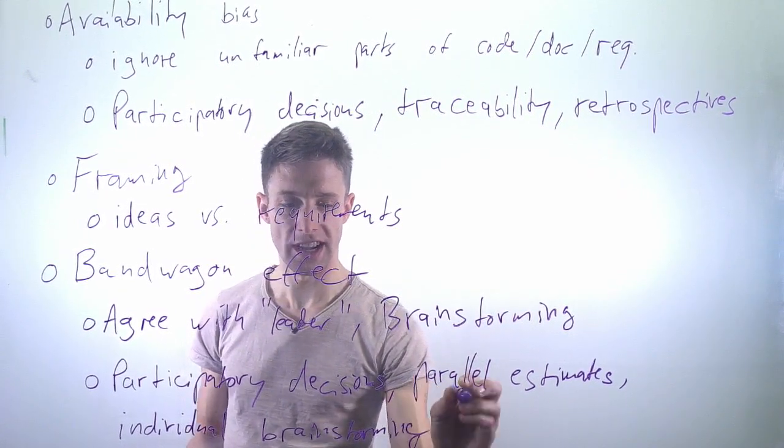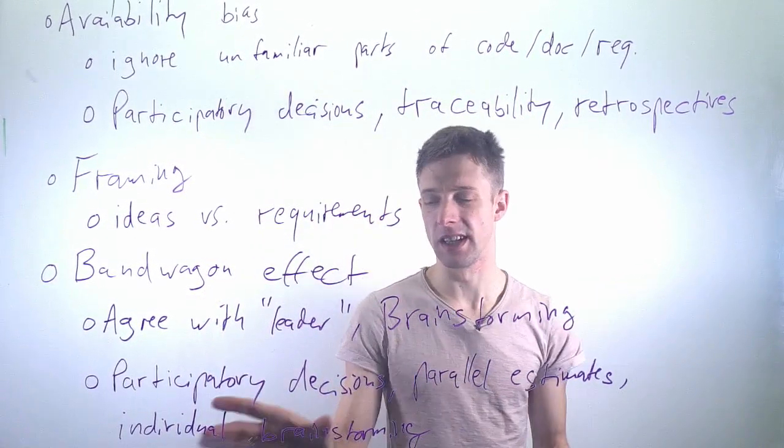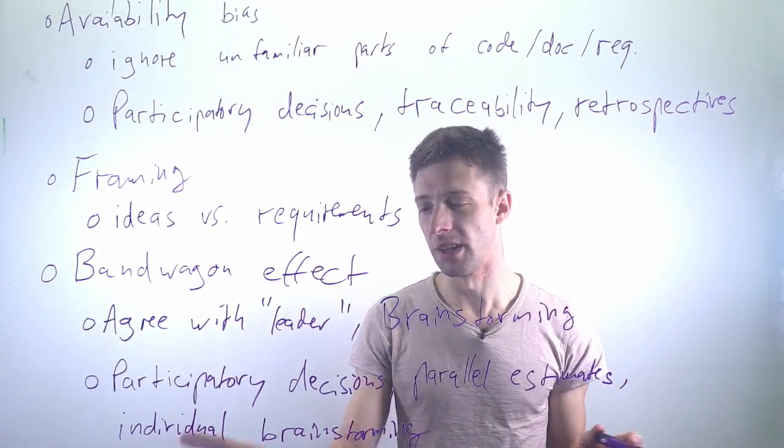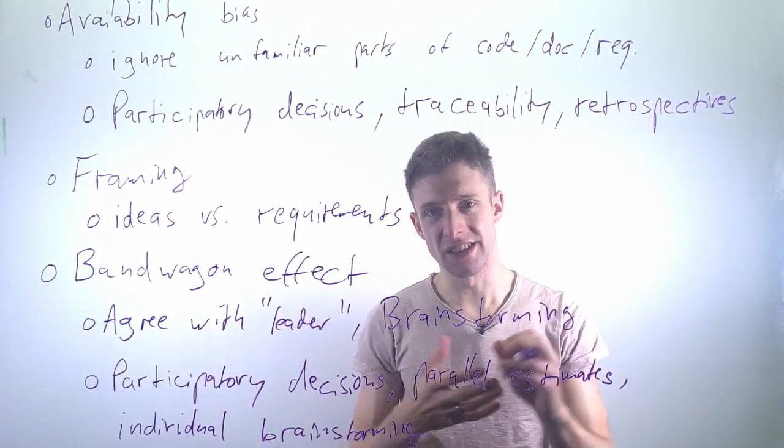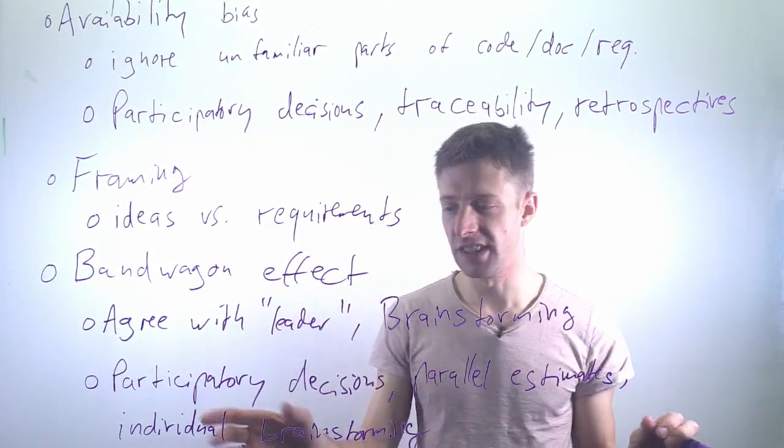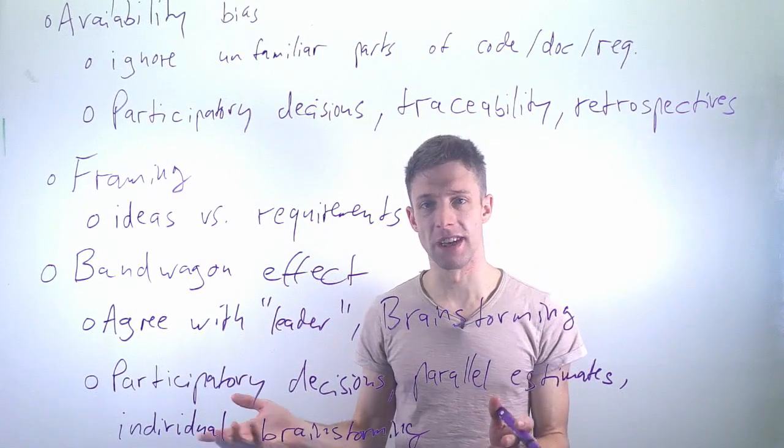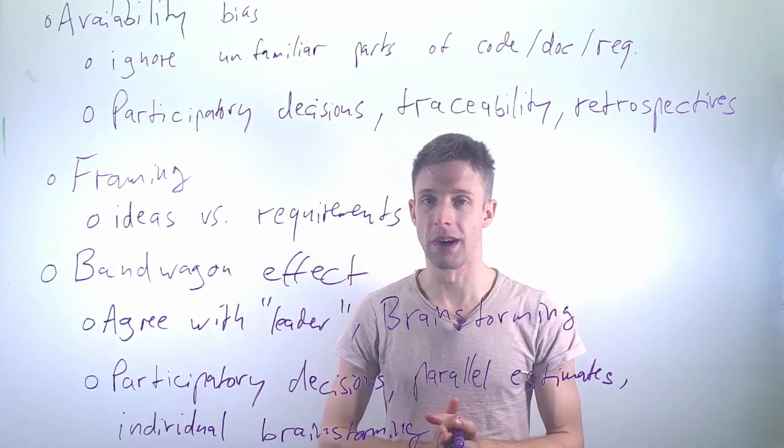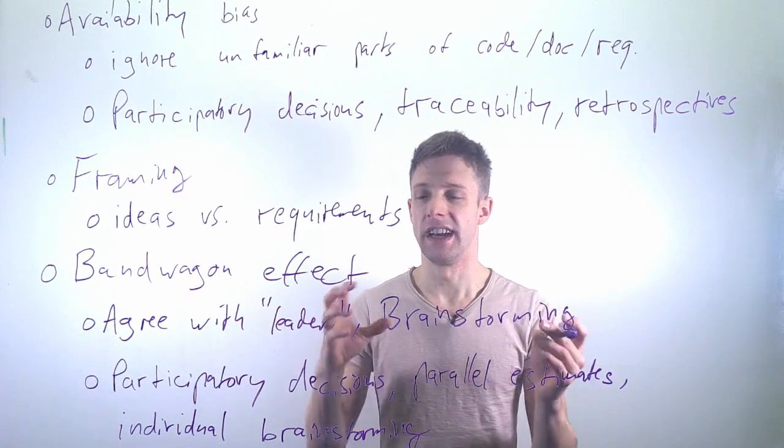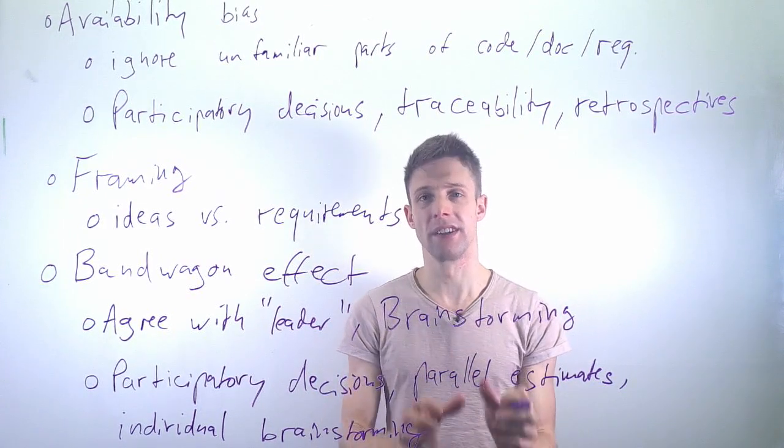So the way this is published in the literature is usually that you recommend that if you're a group of, whatever, a group of ten people, each person individually starts thinking what kind of requirements could we have, what kind of features could we have. And then after five to ten minutes or however long you might think it makes sense, you get together and you share the ideas, and then you already have them written down, they're already documented somewhere.